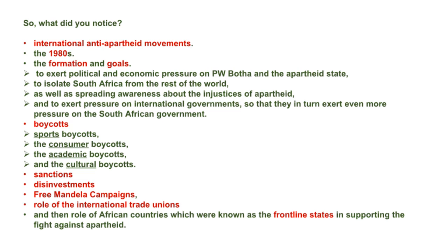These were firstly the formation of the anti-apartheid movements and their goals. Keep in mind that the main goals of the anti-apartheid movements were to exert political and economic pressure on PW Botha and the apartheid state, to isolate South Africa from the rest of the world, as well as spreading awareness about the injustices of apartheid, and to exert pressure on international governments so that they could in turn exert even more pressure on the South African government. It would be very good for you to continually emphasize these statements with evidence and examples during the course of your essay.